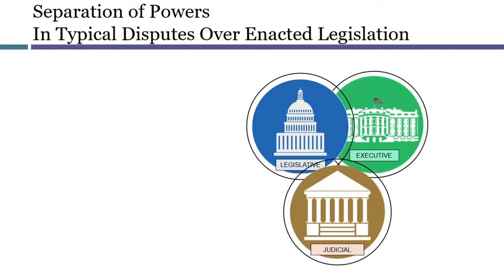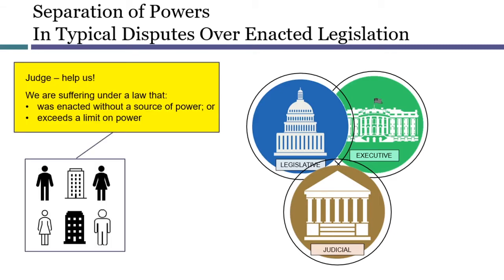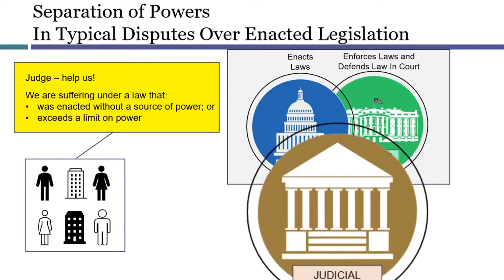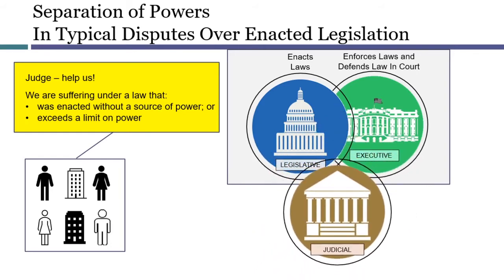There's one separation of powers question that you are already very well familiar with. It can arise in any case where a party claims that a law is unconstitutional, even if separation of powers isn't the theory for unconstitutionality. In these situations, the legislative and executive branches — known together as the political branches — are aligned with each other. Congress enacted the law, and if the constitutionality of the law is questioned, the executive branch sends Department of Justice lawyers to court to defend it. The separation of powers problem involves the role of the judiciary: when is it proper for a court to invalidate actions taken by the other branches? All of the debates about the optimal approach to judicial review ultimately involve a form of separation of powers.